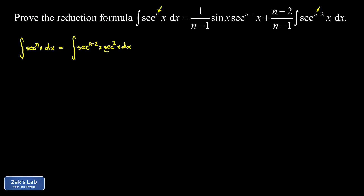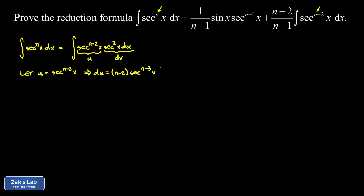Setting up integration by parts, we let secant squared x dx be dv, and the other piece is u. So we let u equal secant to the n minus two of x, and we need to find du. That requires the chain rule: we bring down the power of n minus two, subtract one from the exponent, and multiply by the derivative of secant, which is secant x tangent x.